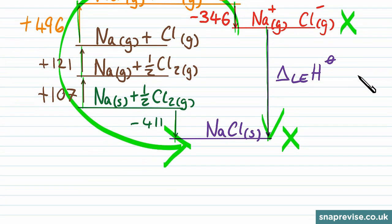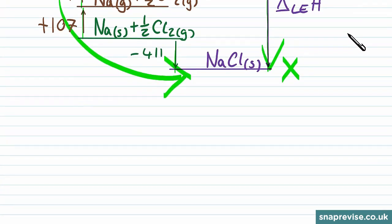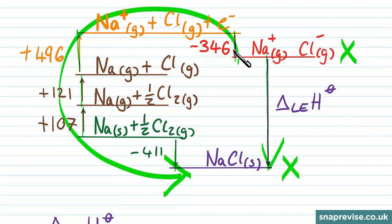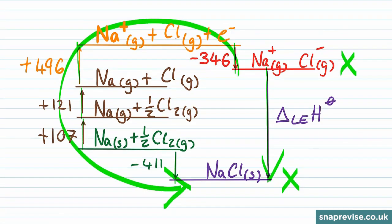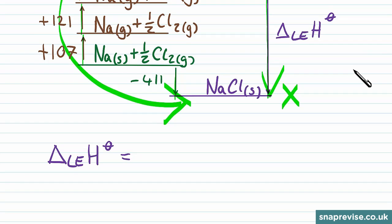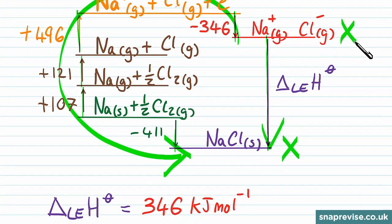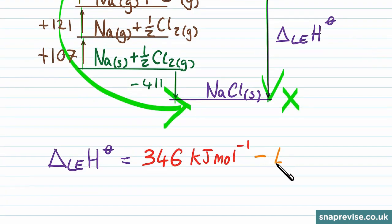So if we write out each of the terms, what we're saying is that the change in enthalpy for the lattice energy is equal to going against this red arrow, so we've got either minus and minus, or you can just think of it as going up in the energy level diagram, so that's an increase in the energy of the system of 346 kJ per mole. We then go against this arrow, and now we're going down in the energy of the system, so we've got minus 496 kJ per mole for undoing the ionization energy of the sodium.